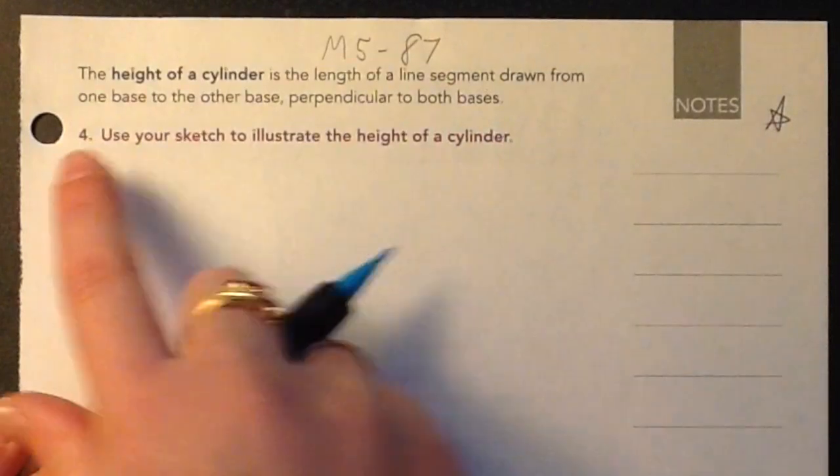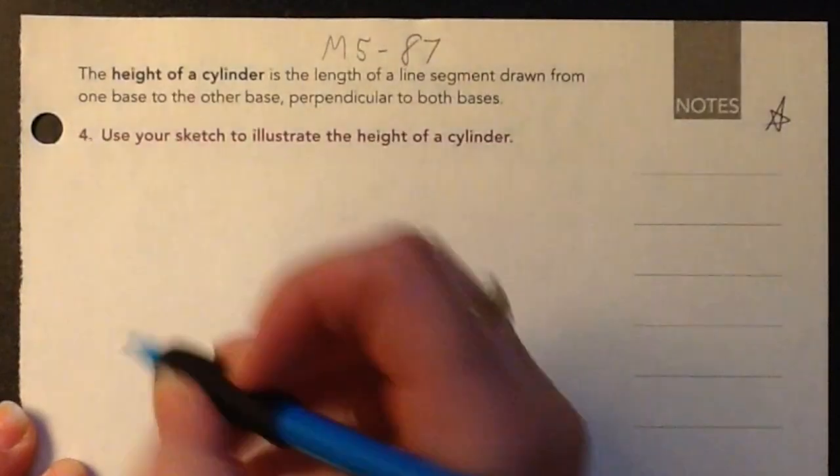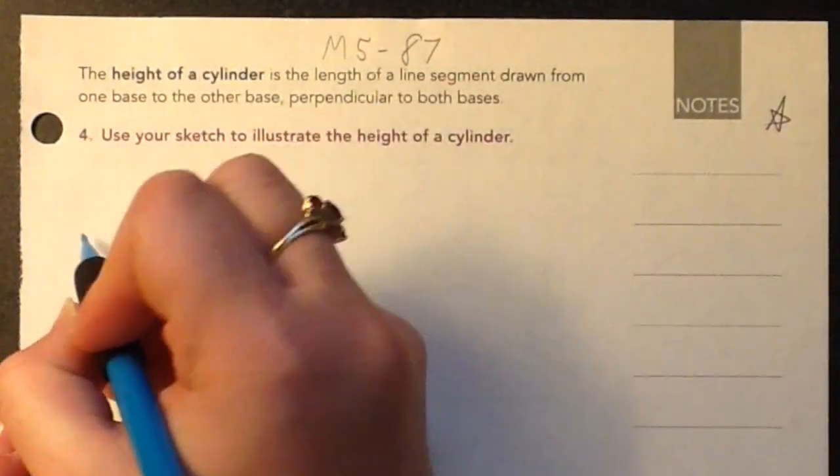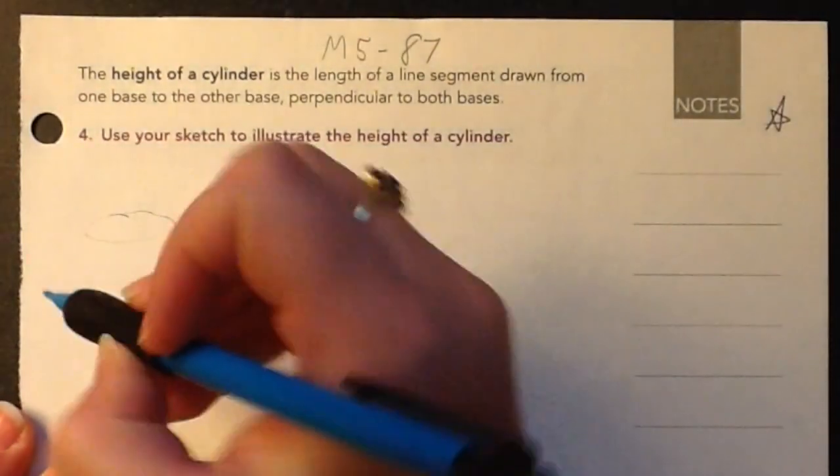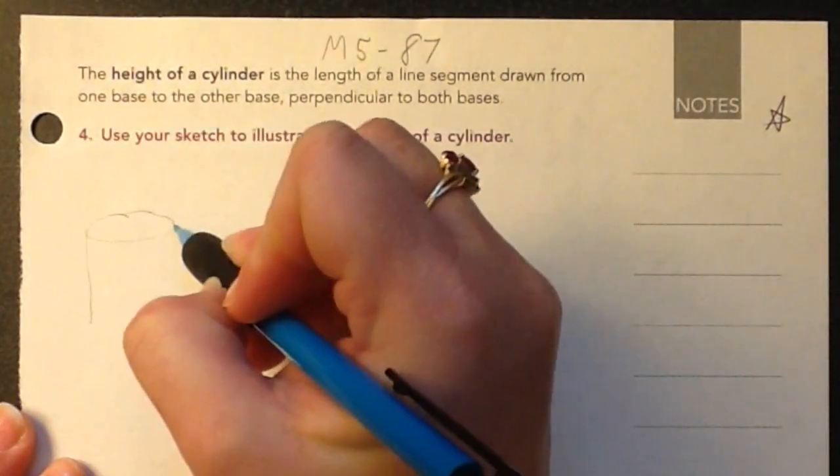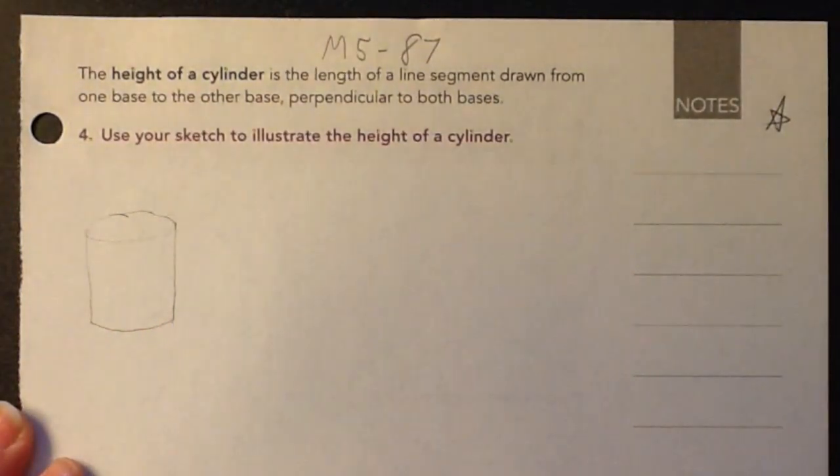So we're going to sketch a cylinder and then label what that height means. If I had an upright cylinder, you could start by drawing an oval and then lines going down and then a curved base, something like that.